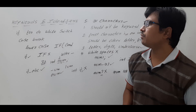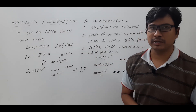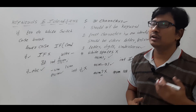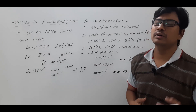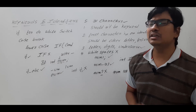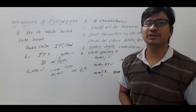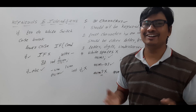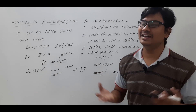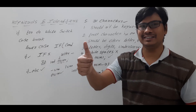I hope you have understood what is a keyword, how many different types of keywords are there, what is an identifier, and what are the rules for a valid identifier. If you still have any doubts related to this concept, feel free to ask me in the comment section. I will try to clear your doubts as early as possible. Thank you for watching the complete video. Have a nice day.